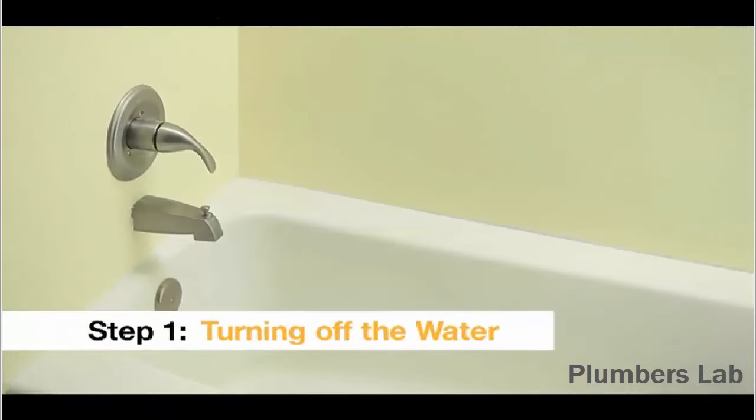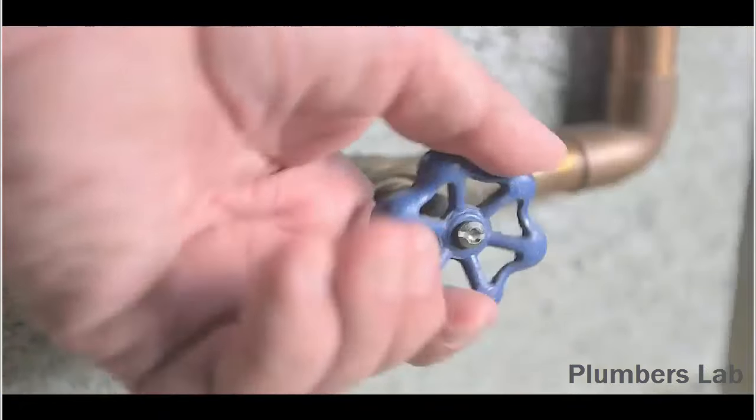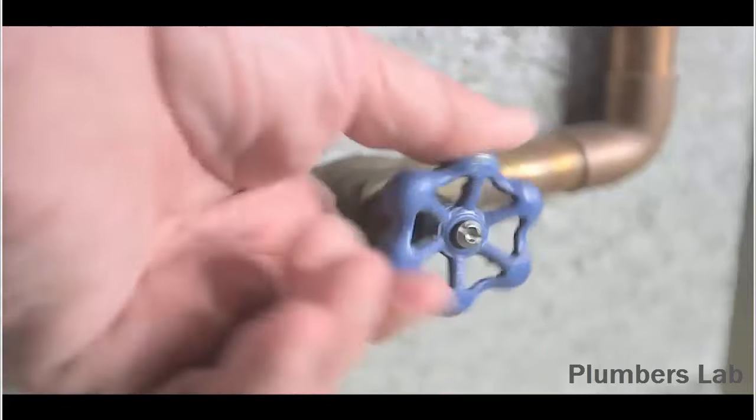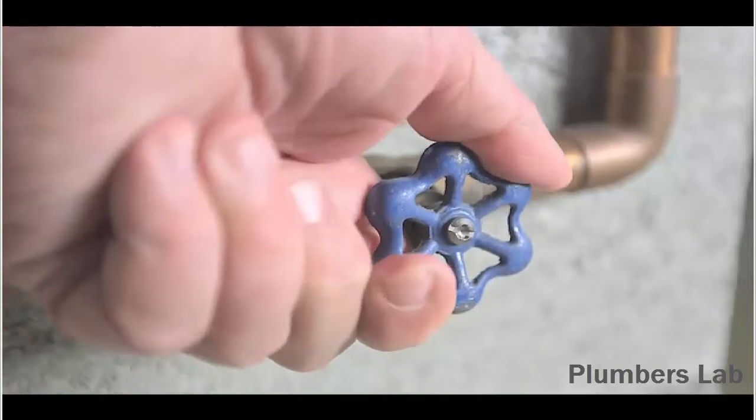Before removing the tub, shut off the water supply. If your bathroom doesn't have a separate cutoff valve, you'll need to turn off the water to the entire house.